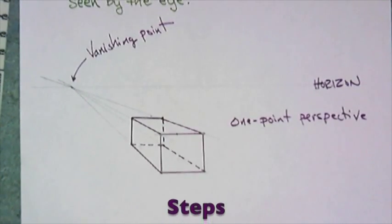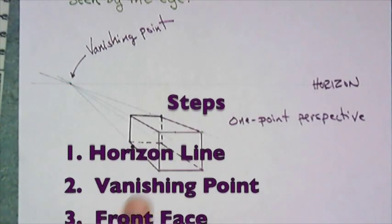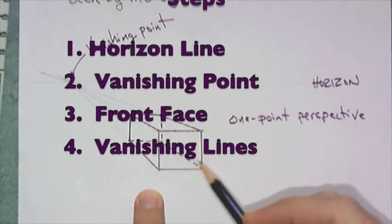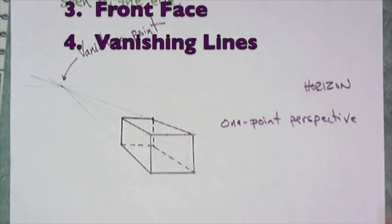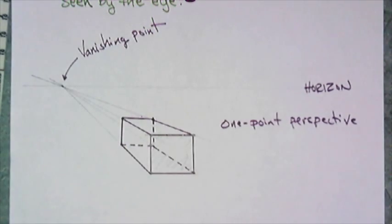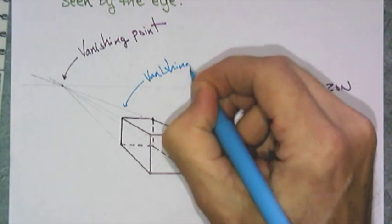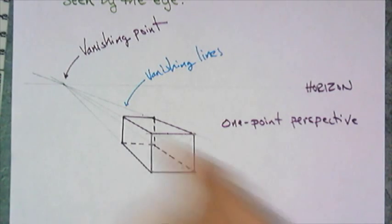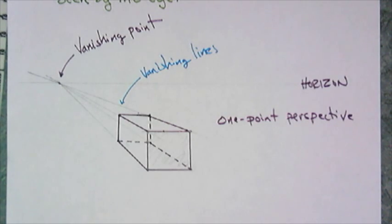Let's review where we started: we drew the horizon line, then we drew a vanishing point, then we started with the front face — which was a rectangle or square. Then we drew those lines, which also have a name. That's the vanishing point, and these guidelines right here are called vanishing lines. I don't need you to erase those lines — just leave them on there. That's like showing your work in an algebra problem. Every vanishing line intersects at the vanishing point. These are the hidden lines. That's a one point perspective.